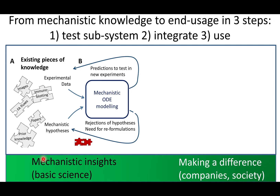So how do we do this? We take from our collaborators mechanistic hypotheses and experimental data, convert the hypotheses — the ideas of how the system works — to ordinary differential equations, which we fit to data. If we fail to get good agreement, we reject the hypothesis.